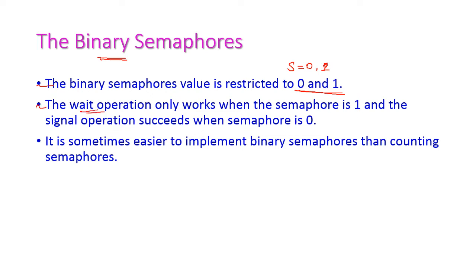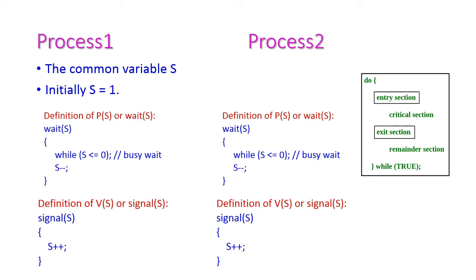The binary semaphore value is restricted to 0 and 1. The semaphore value S can only be either 0 or 1. The wait operation only works when the semaphore value is 1 — since 1 is a positive value, the value will be decremented to 0 and it will enter into the critical section. If the semaphore value is not 1, it will be stuck in the while loop. It is sometimes easier to implement binary semaphore compared to counting semaphore, because the S value is only 0 or 1. Now let us see the working principle of binary semaphore — how two processes will share the critical region.